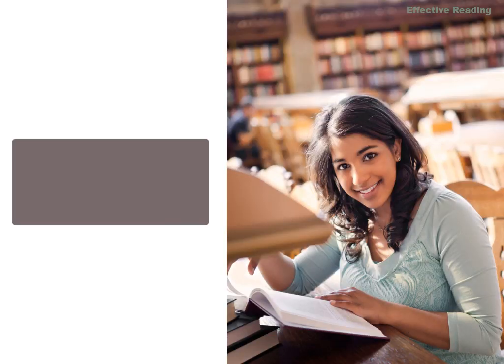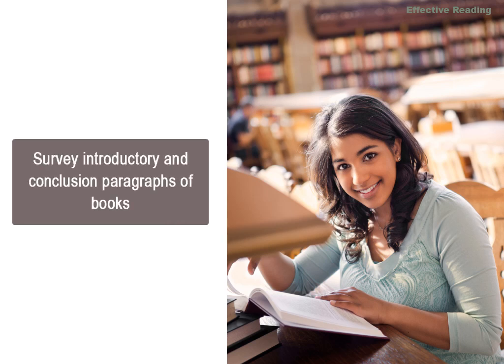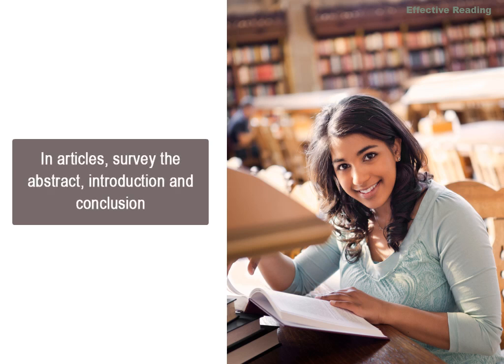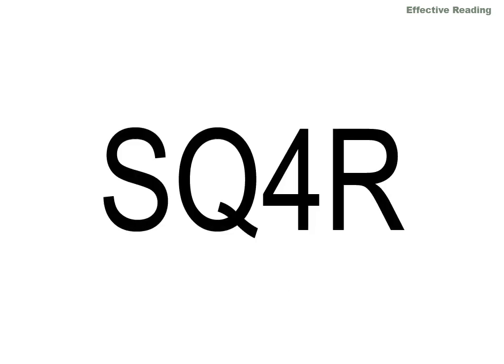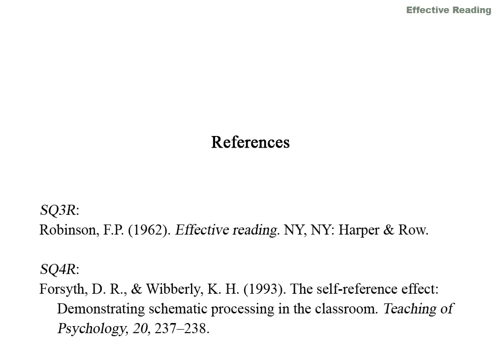The concepts from SQ4R were designed for textbooks, but you can apply them to any other book or journal article. For books, survey the introductory and conclusion paragraphs of a chapter to pull out the key facts and information — these will help you formulate questions. For articles, the abstract, introduction, and conclusion will typically be the key parts to survey.